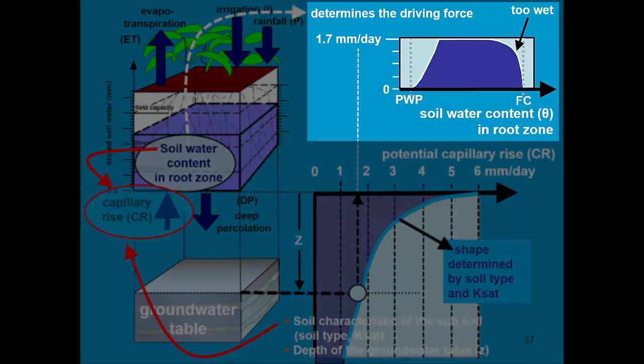It determines the driving force. When the soil is too wet, when the soil water content in the root zone is close to or above even field capacity, capillary rise is zero. Water cannot be transported upwards since there is no driving force.